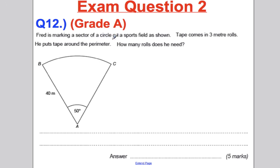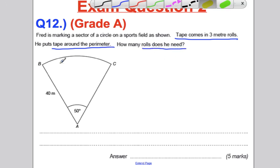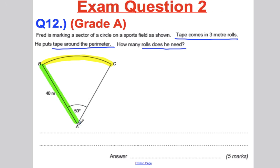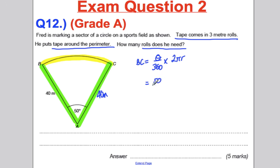Fred is making a sector on a sports field and tape comes in 3-metre rolls. We need the entire perimeter. First, find arc length BC: BC = (50/360) × 2 × π × 40 = 34.9 metres.